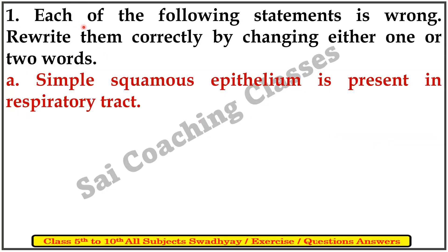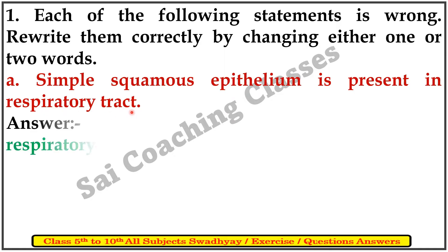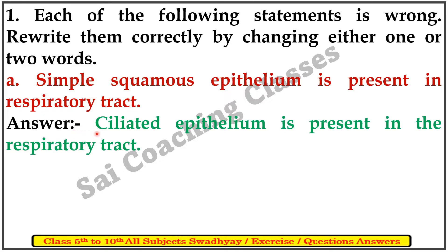First question is saying: each of the following statements is wrong. Rewrite them correctly by changing either one or two words. A. Simple squamous epithelium is present in the respiratory tract. Answer: Ciliated epithelium is present in the respiratory tract.